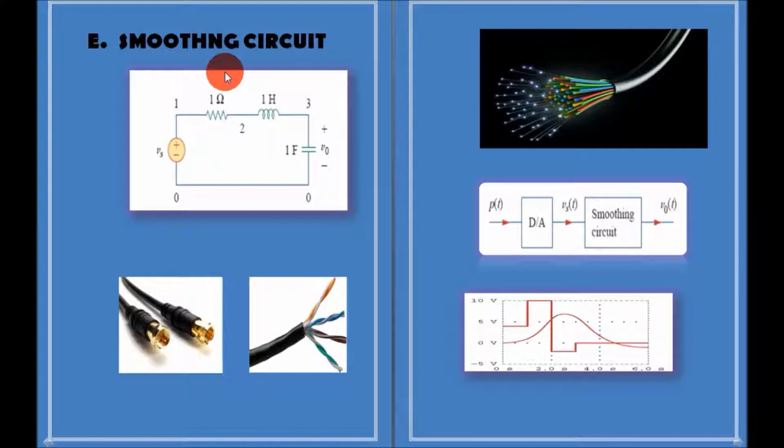In the fifth and the last DC application of a RLC network, we are going to study about a smoothing circuit. Smoothing circuits are used in the proper conversion of a digital signal back to an analog signal. An RLC circuit may be used as a smoothing circuit.